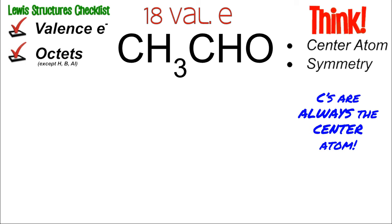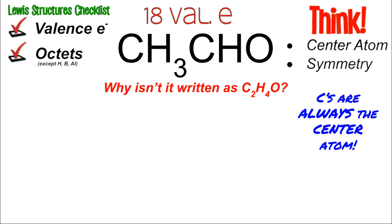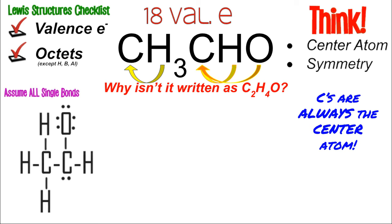Start by drawing two C's bonded together, put three H's around the first carbon, put one H and one O on the second carbon, and assume all single bonds. The orientation doesn't matter as long as elements are bonded correctly with the right number of electrons and bond lines. My gut says this isn't correct because carbons should bond four times, but I see only three bond lines and one lone pair. Also, oxygen usually bonds twice.